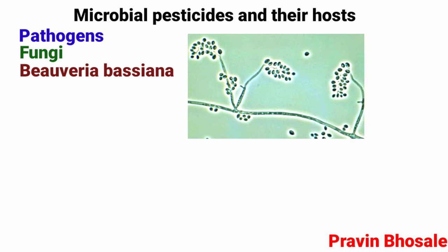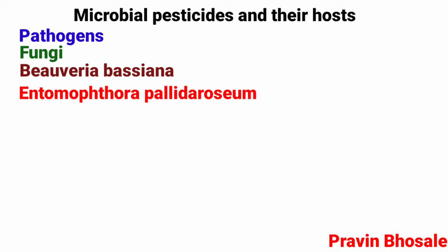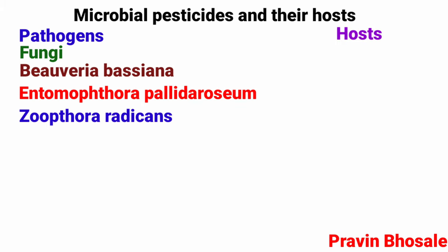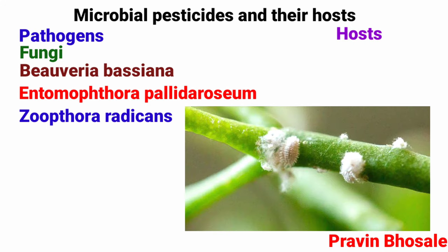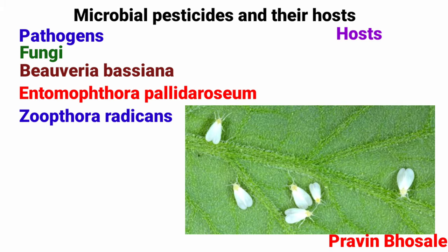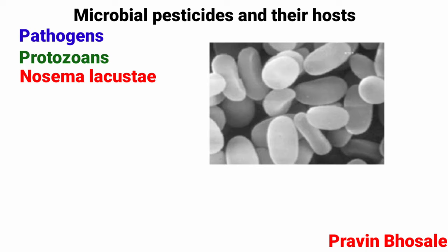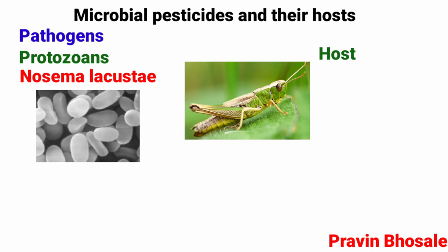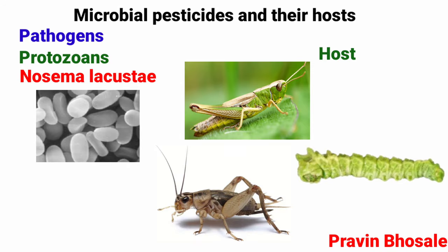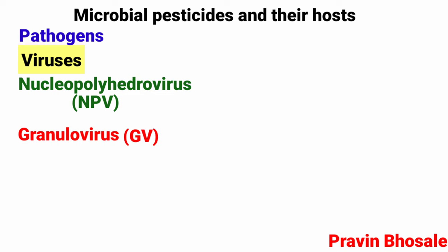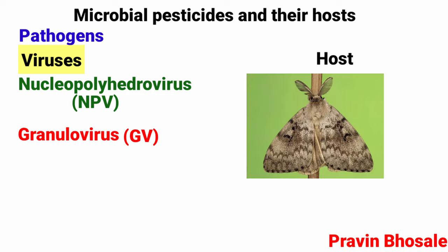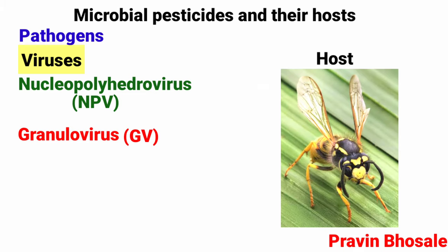Fungal biocontrol agents include Beauveria bassiana, Entomophthora, Pandora and Zoophthora radicans. Their hosts include aphids, mealybugs, mites, and whiteflies. Protozoan agents include Nosema locustae, with hosts being grasshoppers, caterpillars, and crickets. Viral agents include nucleopolyhedrovirus (NPV) and granulovirus (GV), with hosts including caterpillars, gypsy moth, ants, wasps, and beetles.